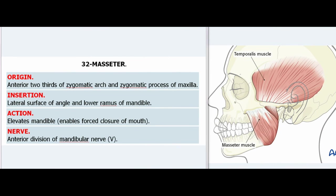32. Masseter. Origin: Anterior two-thirds of zygomatic arch and zygomatic process of maxilla. Insertion: Lateral surface of angle and lower ramus of mandible. Action: Elevates mandible, enables forced closure of mouth. Nerve: Anterior division of mandibular nerve (V).